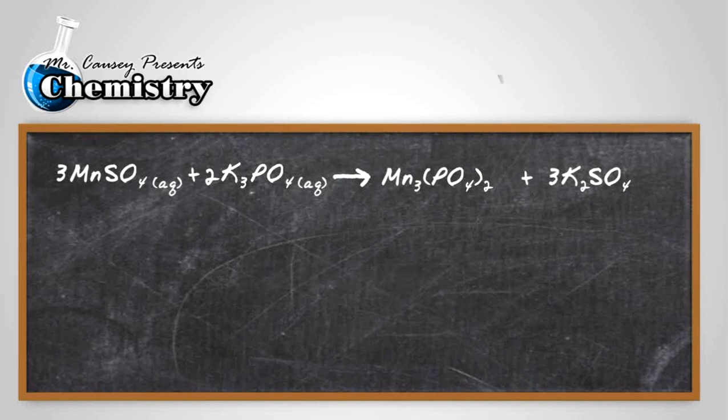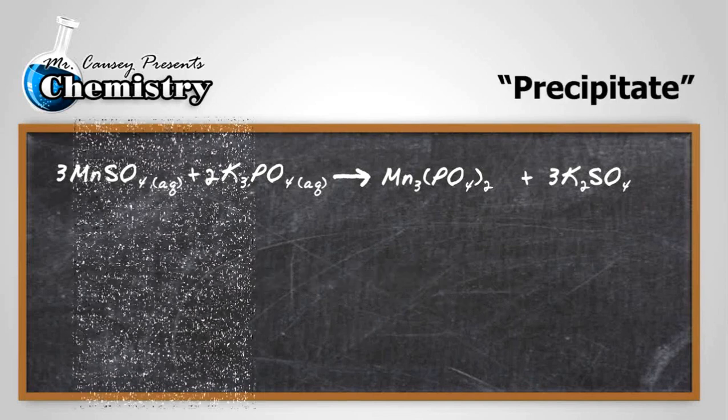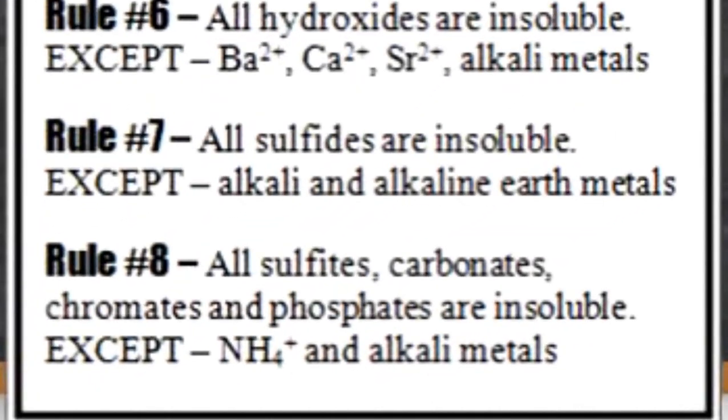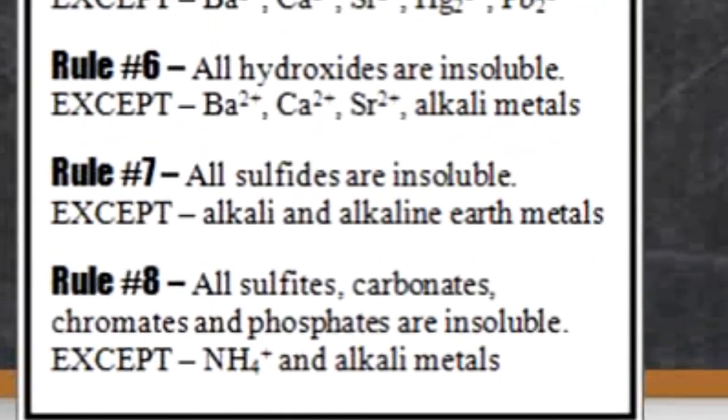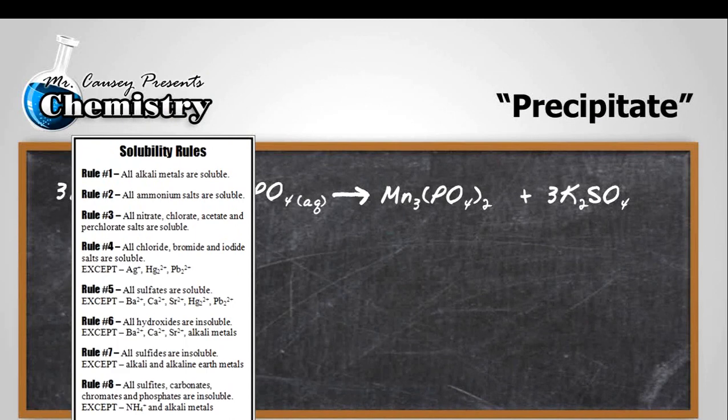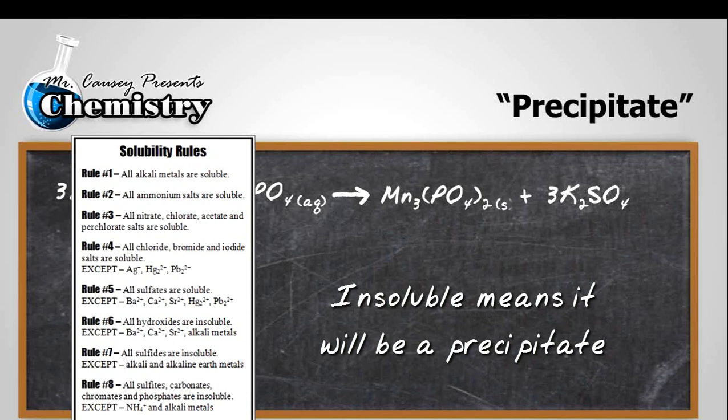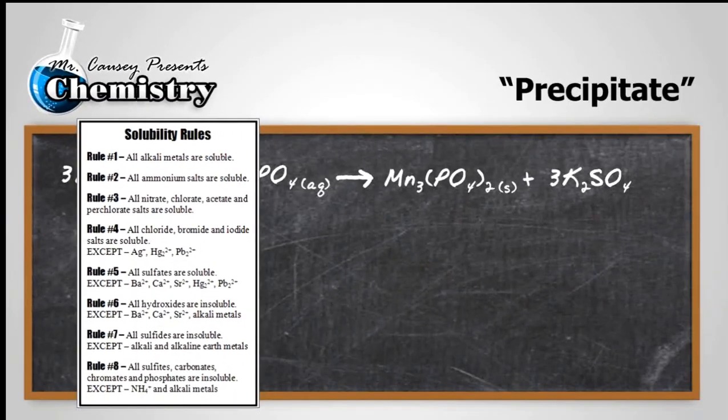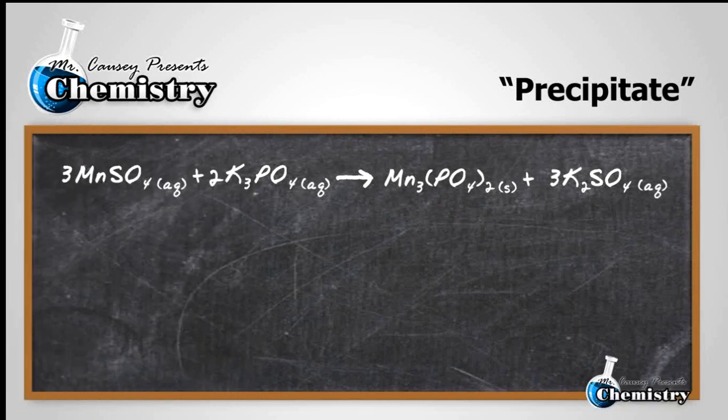Now let's check for a precipitate. That's going to require our rules here. Let's go over and look at our rule. If you look at rule number eight, rule number eight shows us that phosphates as a general rule are insoluble, and just so happens that manganese phosphate would be insoluble, so that's going to be a solid and it's going to precipitate out. And then if you look at rule number one, potassium sulfate is going to be soluble because all alkaline metals are soluble, and rule number one pretty much overrides all the other rules. That's going to be aqueous.